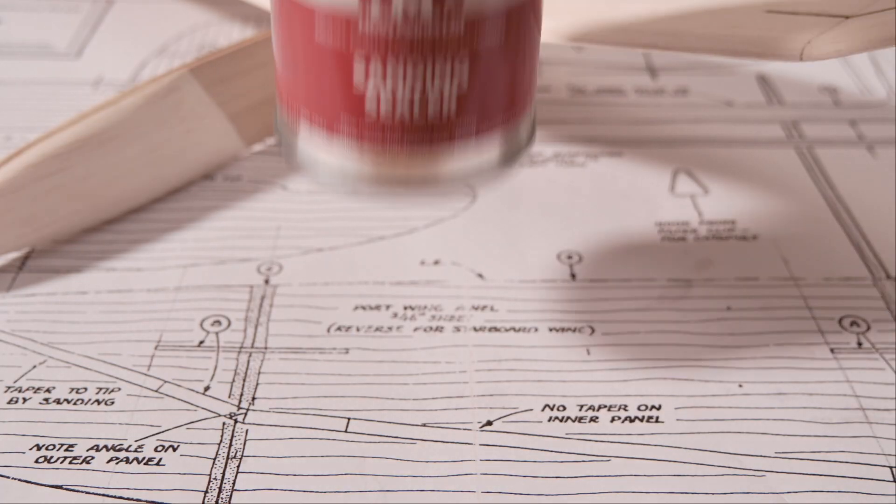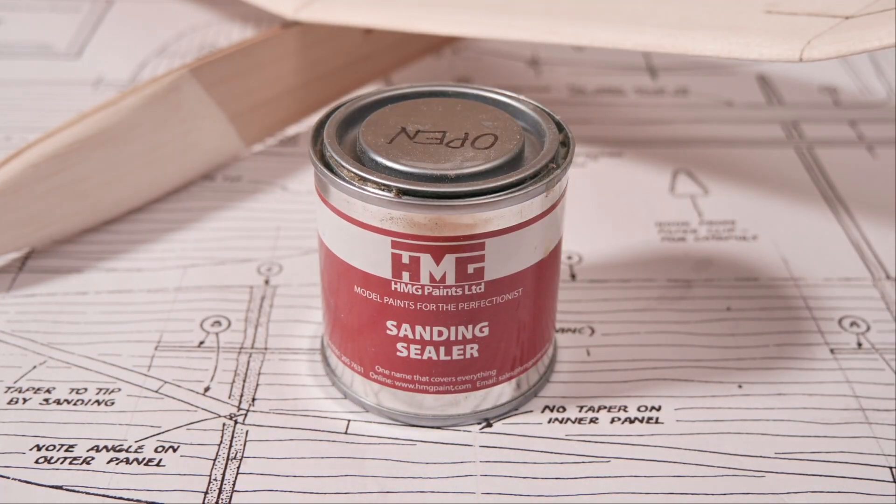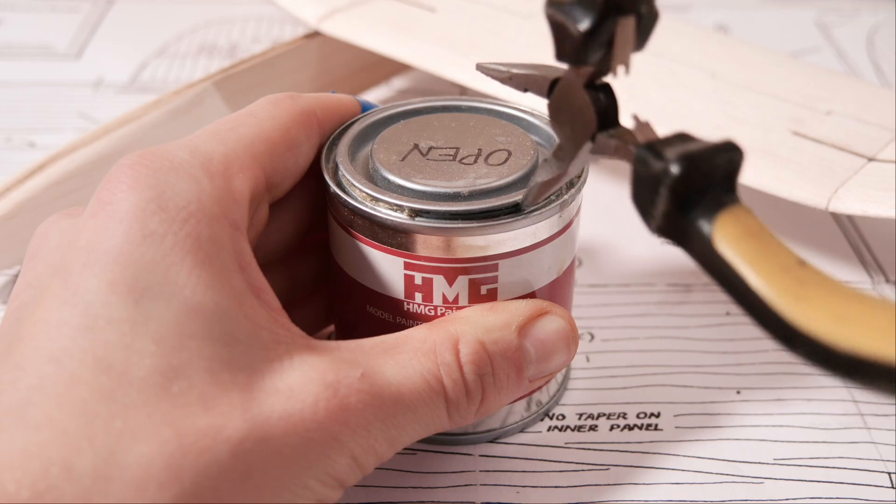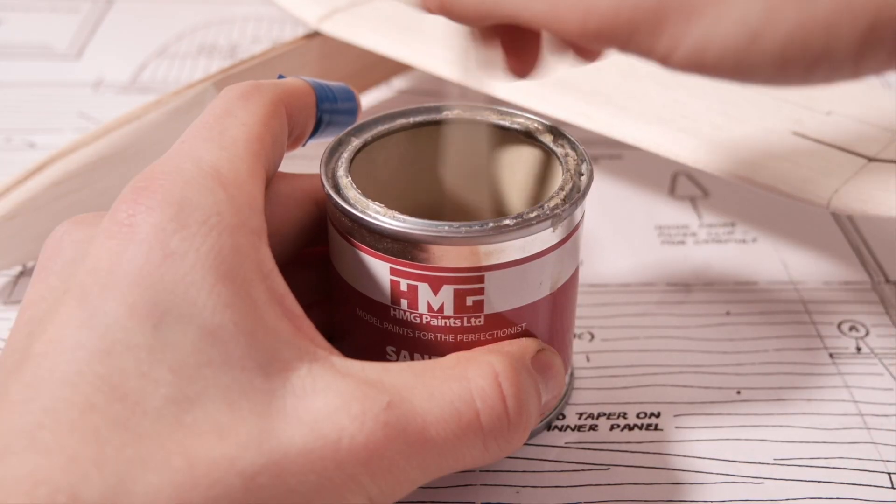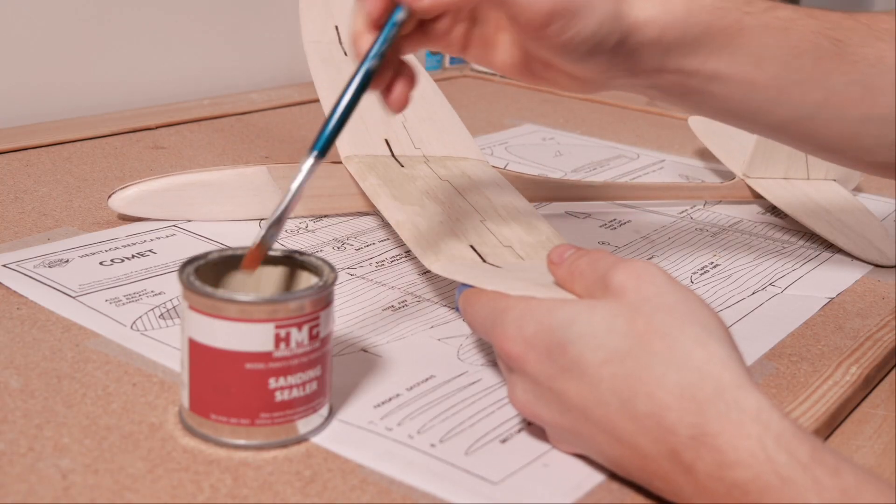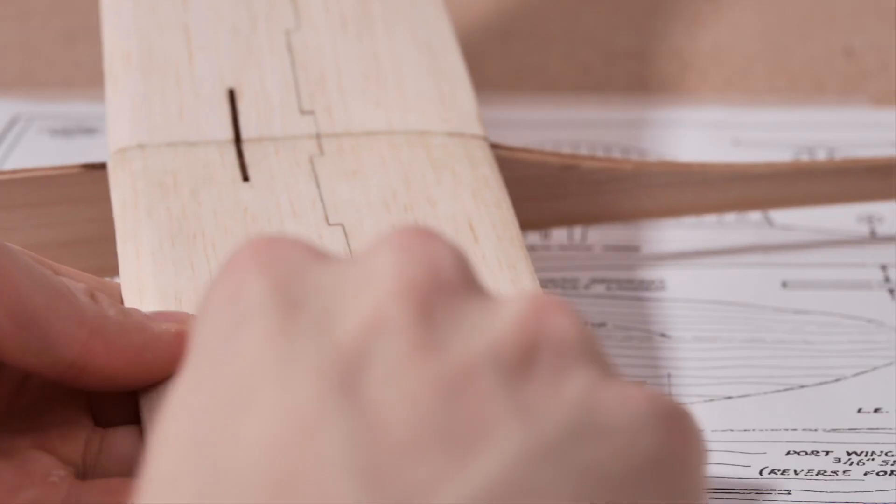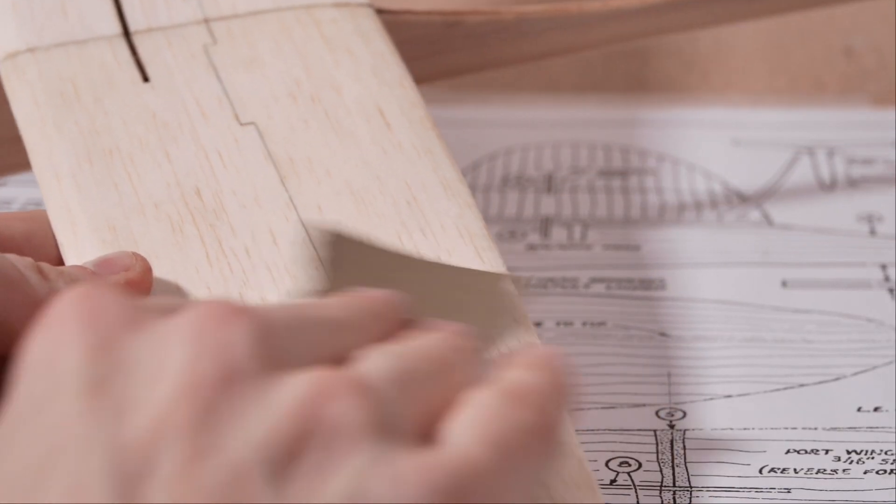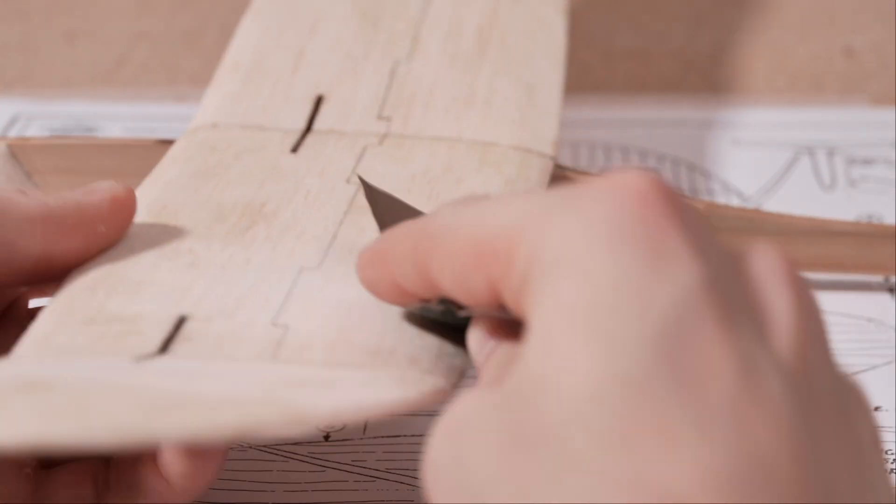For some additional protection against the elements, sanding sealer can be applied to the entire airframe. After sanding, the sealer will prevent any paint from being absorbed into the wood.